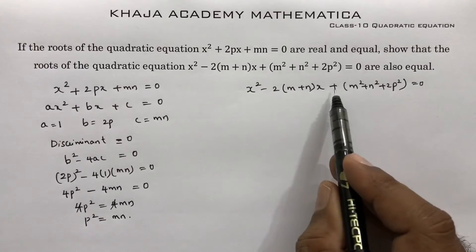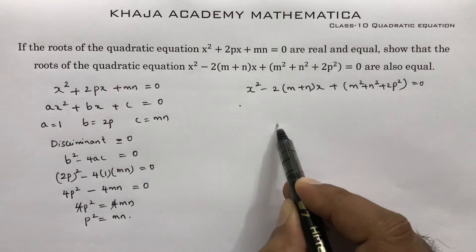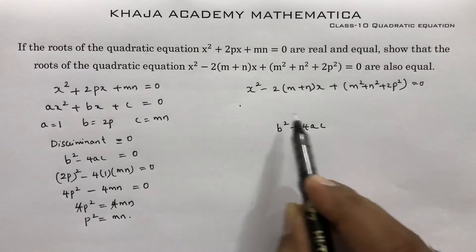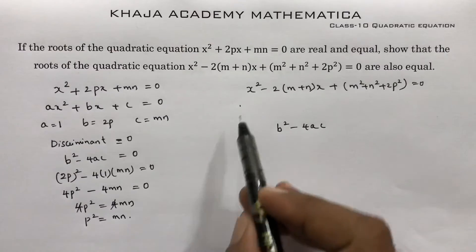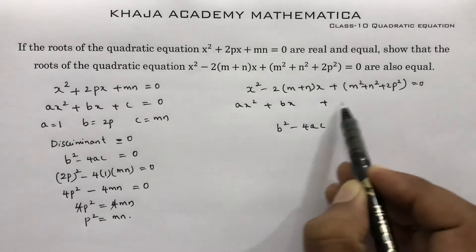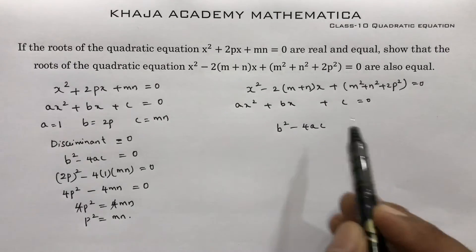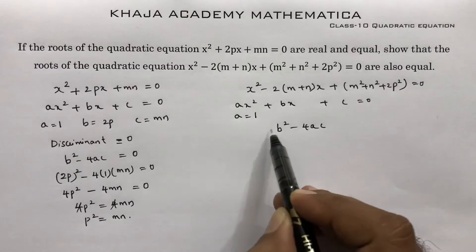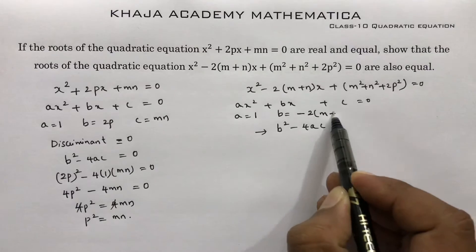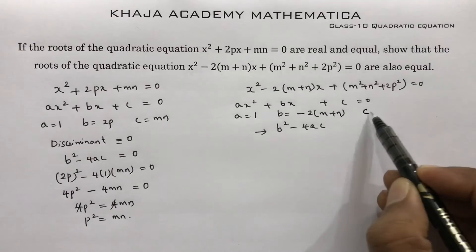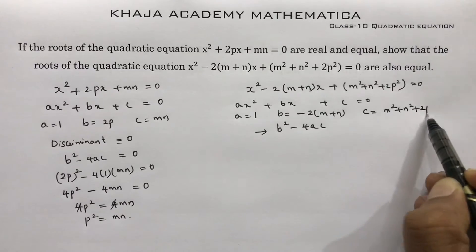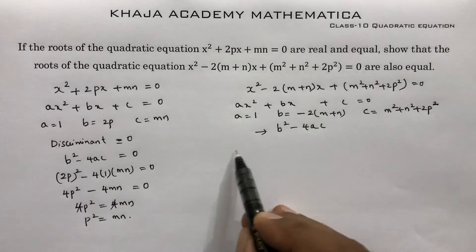Now for the second equation, we also need to find b² - 4ac. If the result is 0, the roots are equal. Comparing with ax² + bx + c = 0: a = 1, b = -2(m+n), and c = m² + n² + 2p².